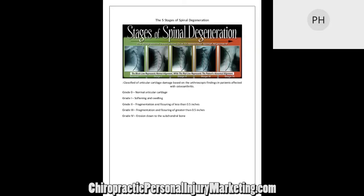Arthritis is the number one disability in the United States, affecting 1 in 5 people. The number one type of arthritis is osteoarthritis — that's the most common versus rheumatoid and others.